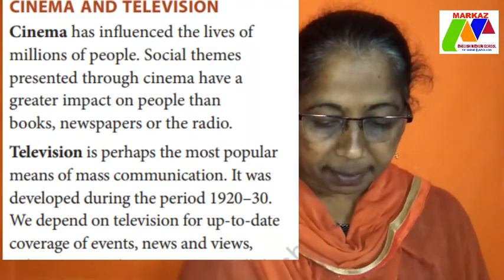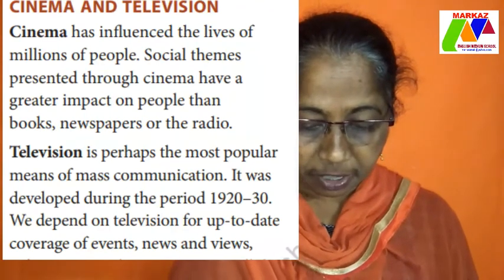Radio is something we only listen to — we are not able to see anything. Newspapers are something we only read — we cannot see any visuals. But cinema gives you a visual too: you can see and listen. That has much more effect on the human brain than only reading or only listening. Cinema and television give you both listening and viewing, and that has a greater impact. People enjoy watching television and cinema, and this is a medium where many are influenced. Social themes presented through cinema have a greater impact on people than books, newspapers, or the radio.